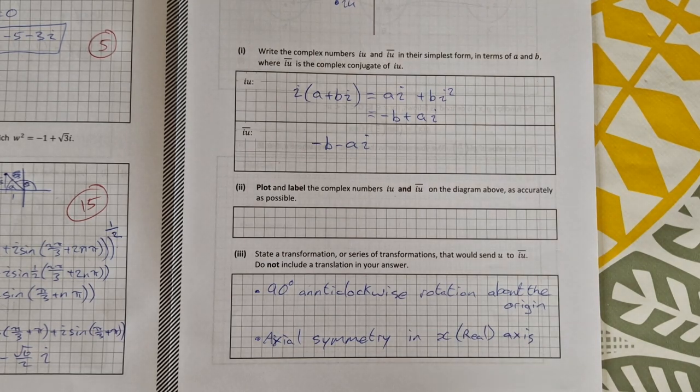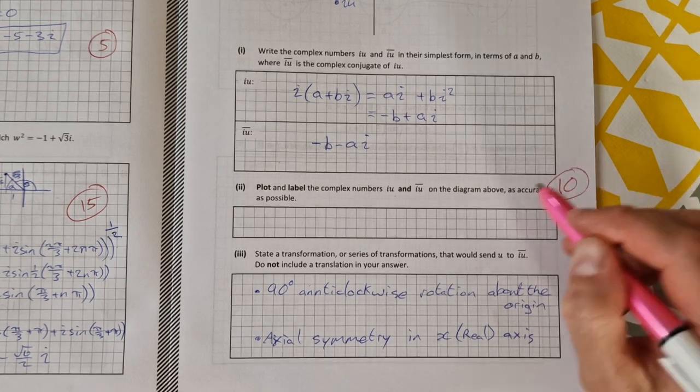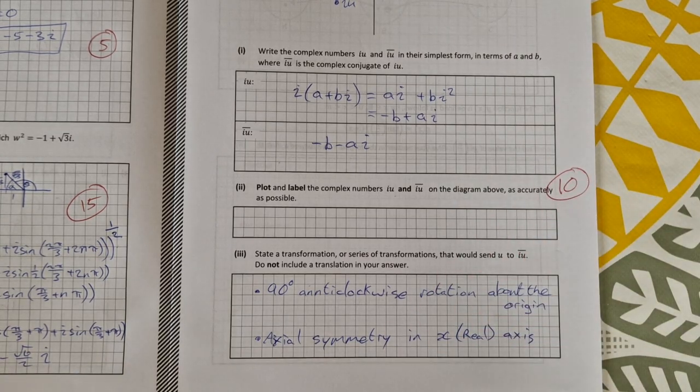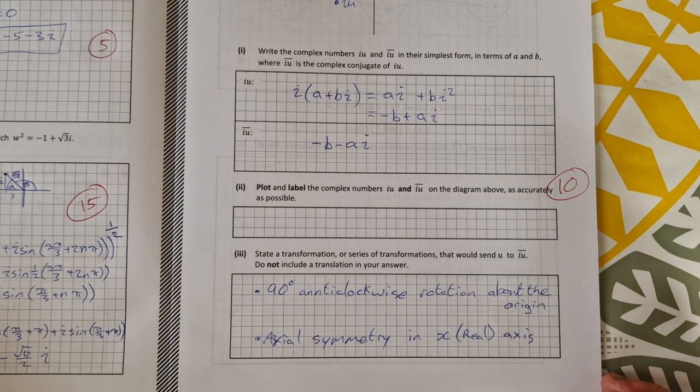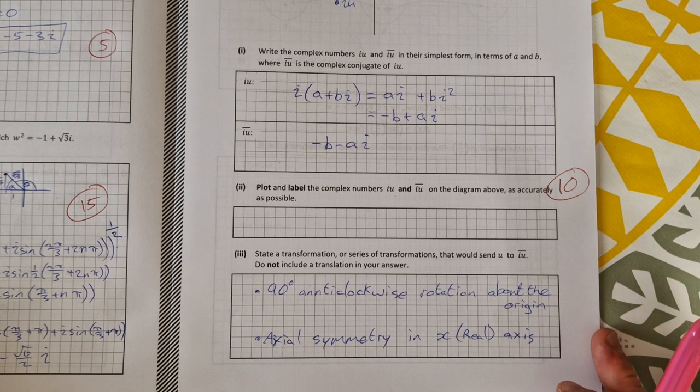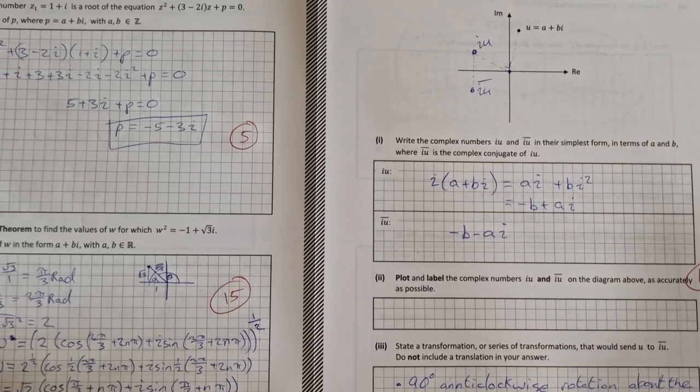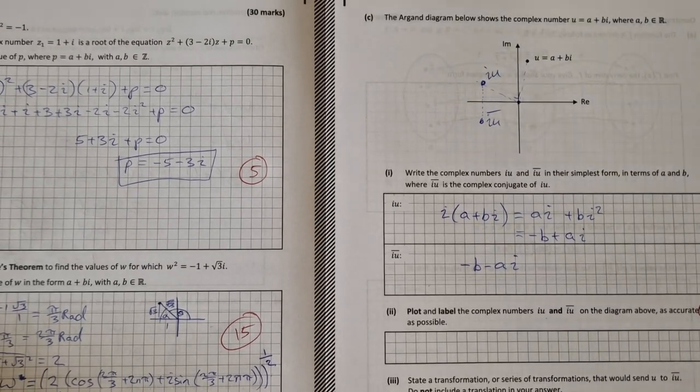So that is all you need for part c. Part c was worth 10 marks, which was probably quite generous. It was the easiest part, I think, of this question in total. So if you have any questions about it, just ask in the comments below. Thanks for watching and I'll see you in the next video.